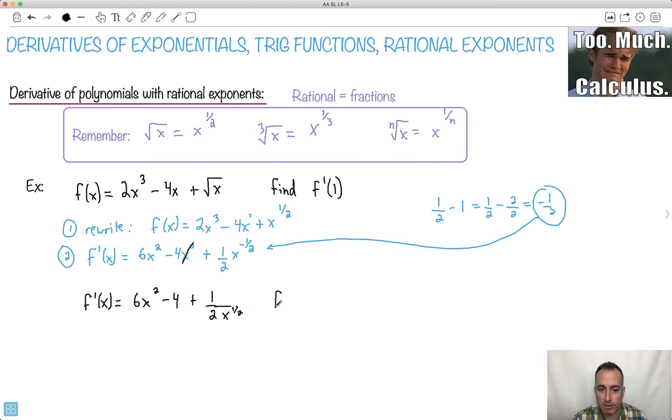And I can further rewrite it, because I could say that, hey, hold on. I know what I can do with that. Remember what something to the 1 half is? That's a square root. So I'm going to say plus 1 over 2 times square root of x. So this is what happened to it. So this is my derivative at any point.